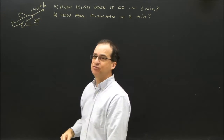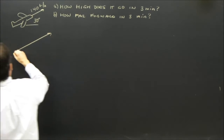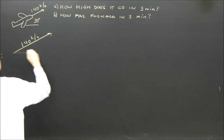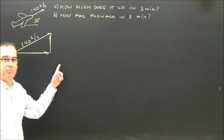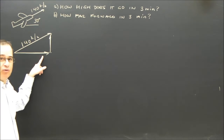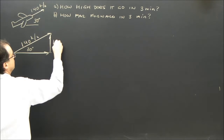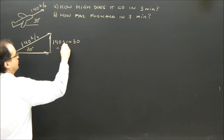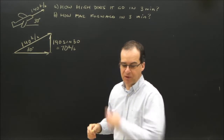So what I'm going to do is find out what the plane is doing in the horizontal and vertical direction. There's my vector — 140 kilometers per hour — and I'm breaking it into components showing how fast it's moving forward and how fast it's moving up. This is 30 degrees, so the vertical component is 140 sine 30, which is 70 kilometers per hour. So it's moving upwards at 70 kilometers per hour.